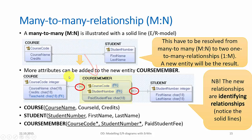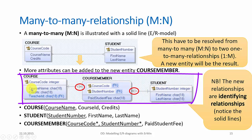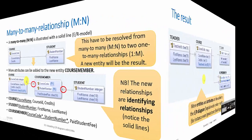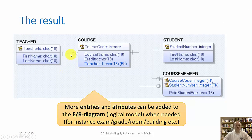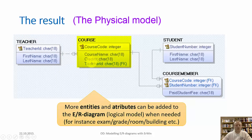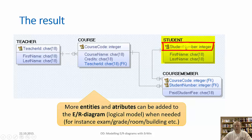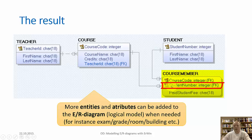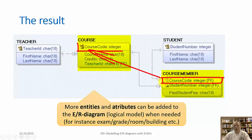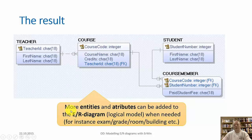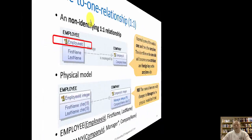We end up with three tables. The course table with course code as its primary key, and course ID and credits as other attributes. The student table with student number as a primary key, and first name and last name as attributes. And course member with course code and student number as a combined primary key — indicated with two stars because they are two foreign keys to two different tables — and the non-identifying attribute paid student fee, which for instance can be a Boolean variable. So we have resolved the many-to-many relationship and ended with a physical model that is possible to realize as a table structure in, for instance, SQL Server. This model can easily be expanded with more entities and more attributes.